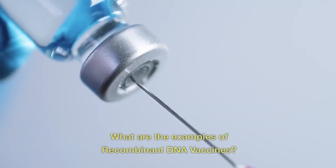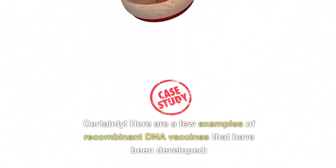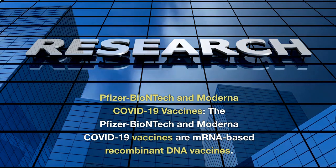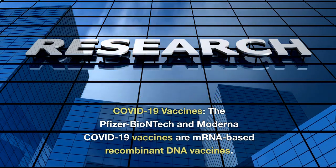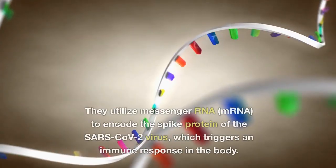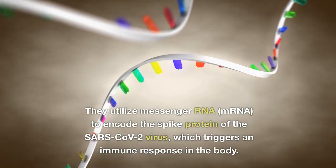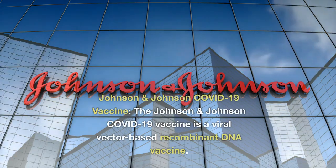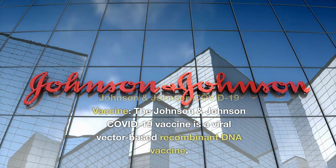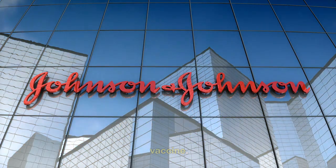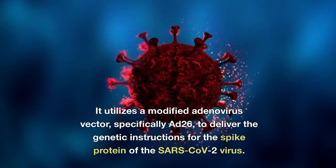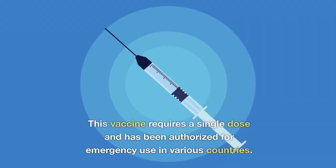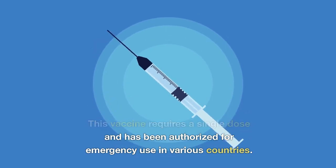What are some examples of recombinant DNA vaccines? The Pfizer-BioNTech and Moderna COVID-19 vaccines are mRNA-based recombinant DNA vaccines. They utilize messenger RNA (mRNA) to encode the spike protein of the SARS-CoV-2 virus, which triggers an immune response in the body. The Johnson & Johnson COVID-19 vaccine is a viral vector-based recombinant DNA vaccine. It utilizes a modified adenovirus vector, specifically Ad26, to deliver the genetic instructions for the spike protein of SARS-CoV-2. This vaccine requires a single dose and has been authorized for emergency use in various countries.